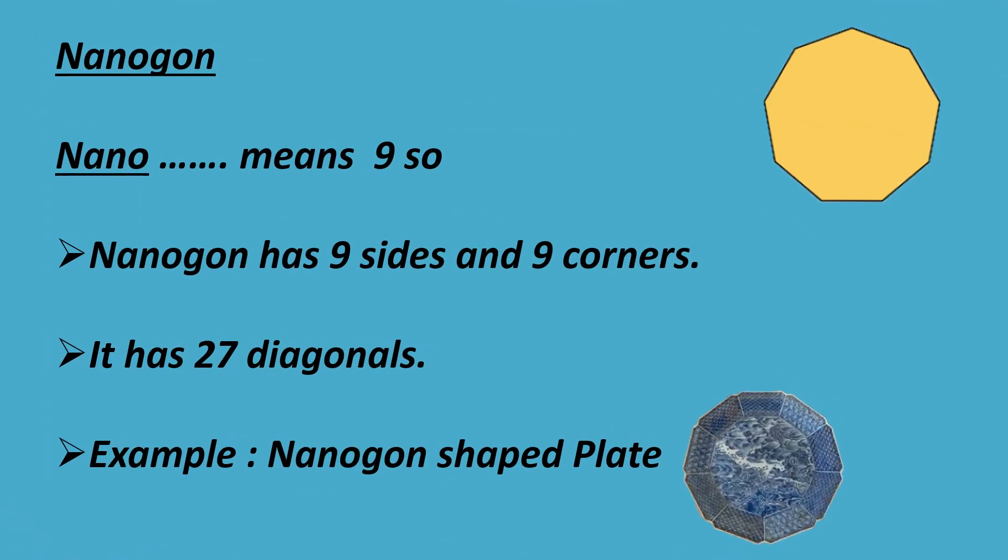Nonagon. Nano means nine. So, nonagon has nine sides and nine corners. It has 27 diagonals. Example: nonagon-shaped plate.